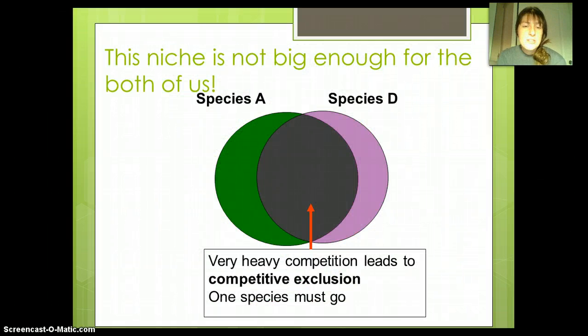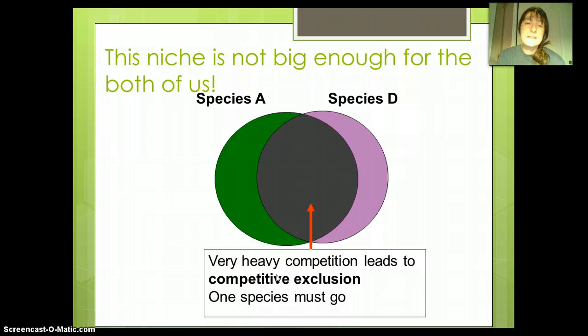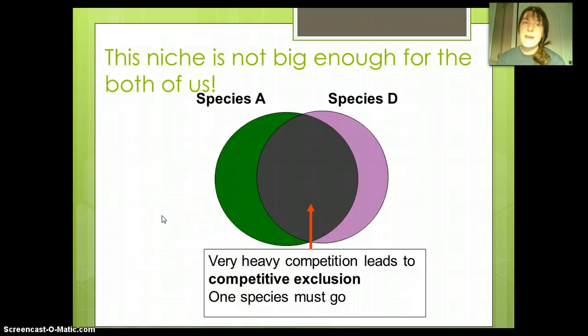However, if specialization does not occur and there's too much interspecies competition, then the idea of competitive exclusion comes into play and one of these species is not able to survive in that particular ecosystem.